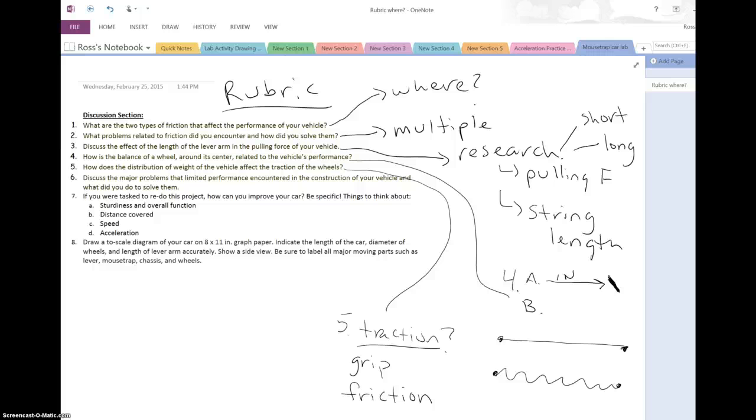Number six: discuss the major problems that limited performance encountered in the construction of your vehicle and what you did to solve them. If we're talking about problems, we're talking about multiple, not just one. We all had problems with our cars—that's okay. Some people went through three or four iterations of their car, and that's a good thing. Talk about that, write about that. That might be a really long paragraph because you might have built three or four different cars or had to change your car a bunch. This is your opportunity to tell me that.